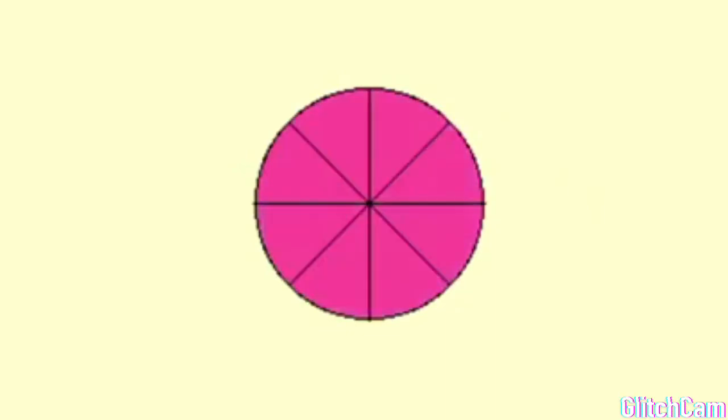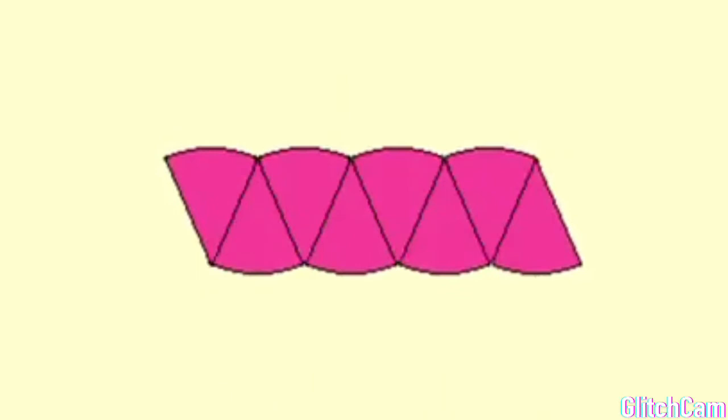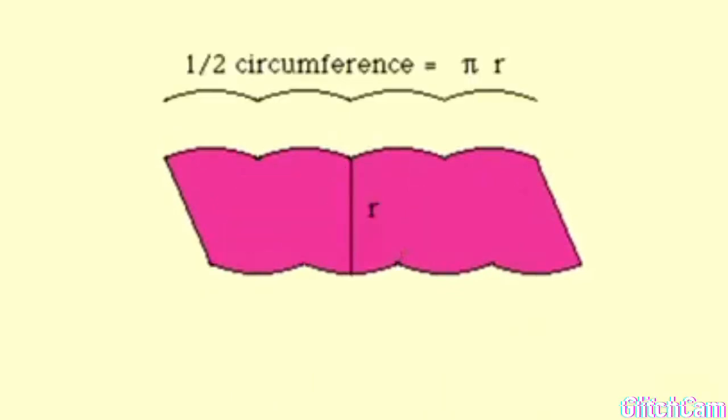The usual definition of pi is the ratio of the circumference of a circle to its diameter, so that the circumference of a circle is pi times the diameter or two pi times the radius.